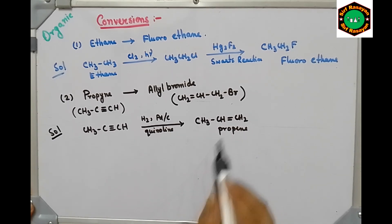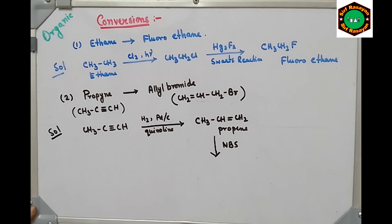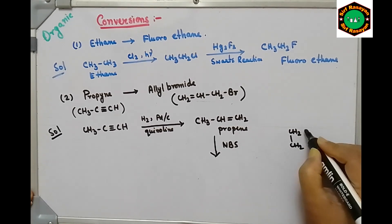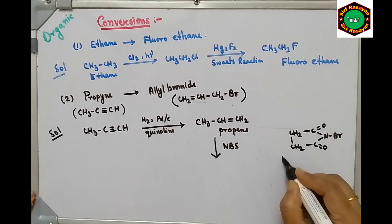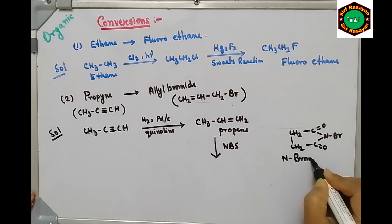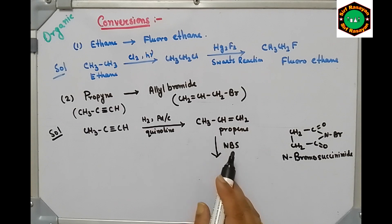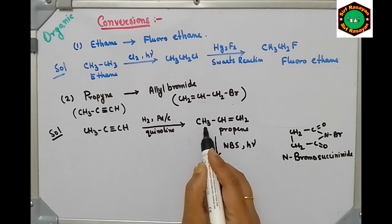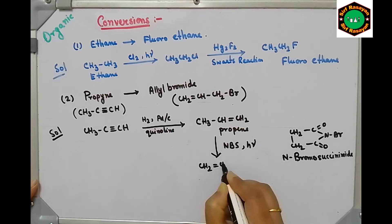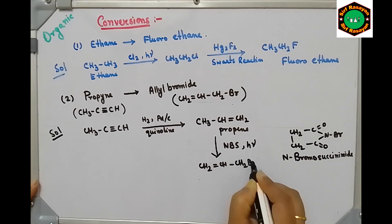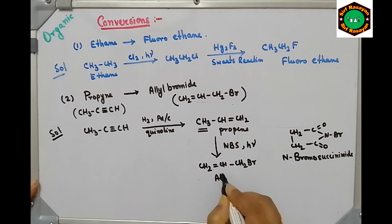This is the allylic position where we have to do bromination. The reagent is NBS — N-bromosuccinimide — which is the allylic bromination reagent, used in the presence of light. One hydrogen from the allylic position will be replaced by Br. So what we get is CH2=CH-CH2Br, which is allyl bromide.